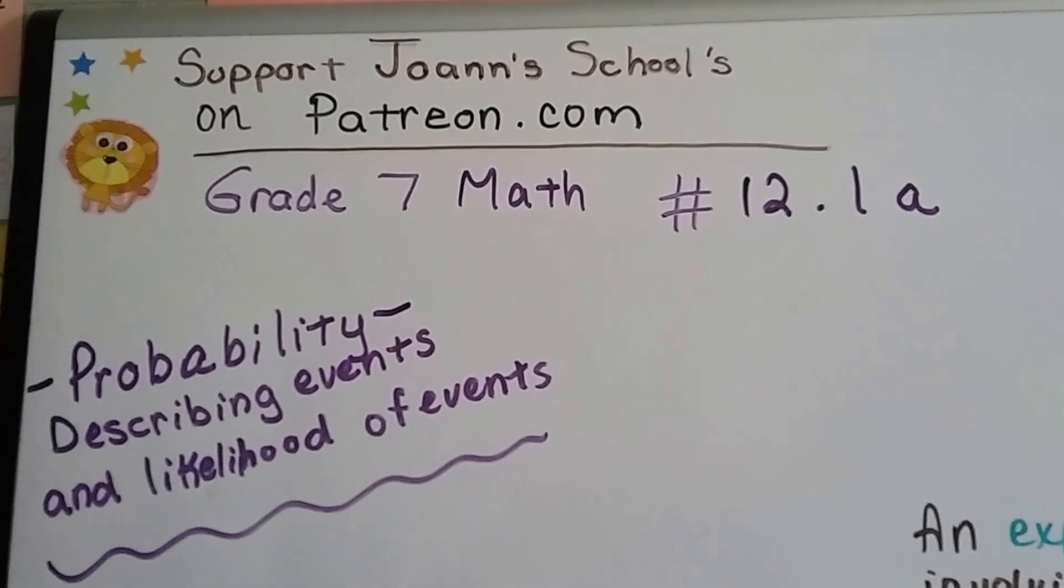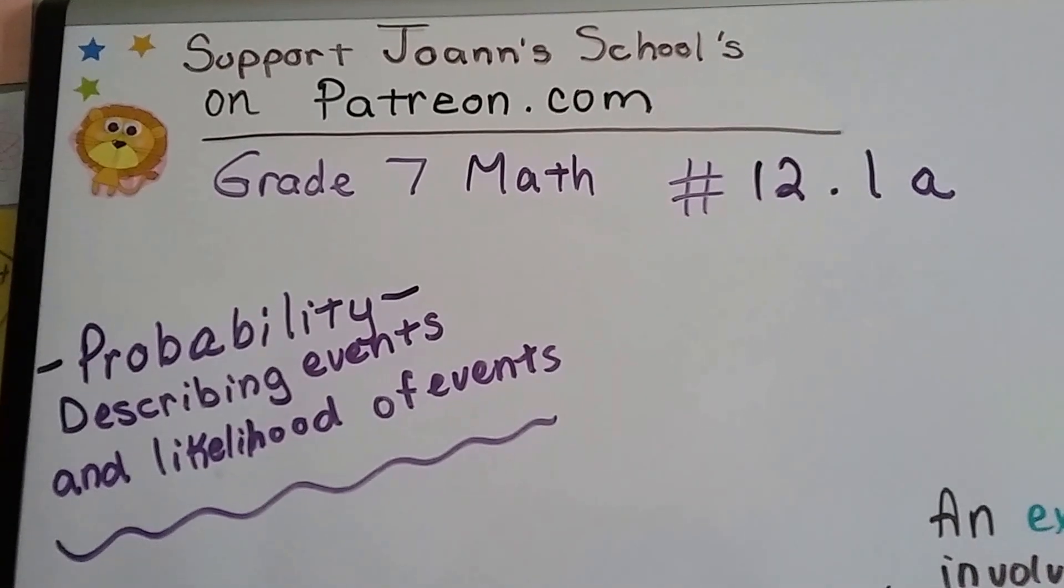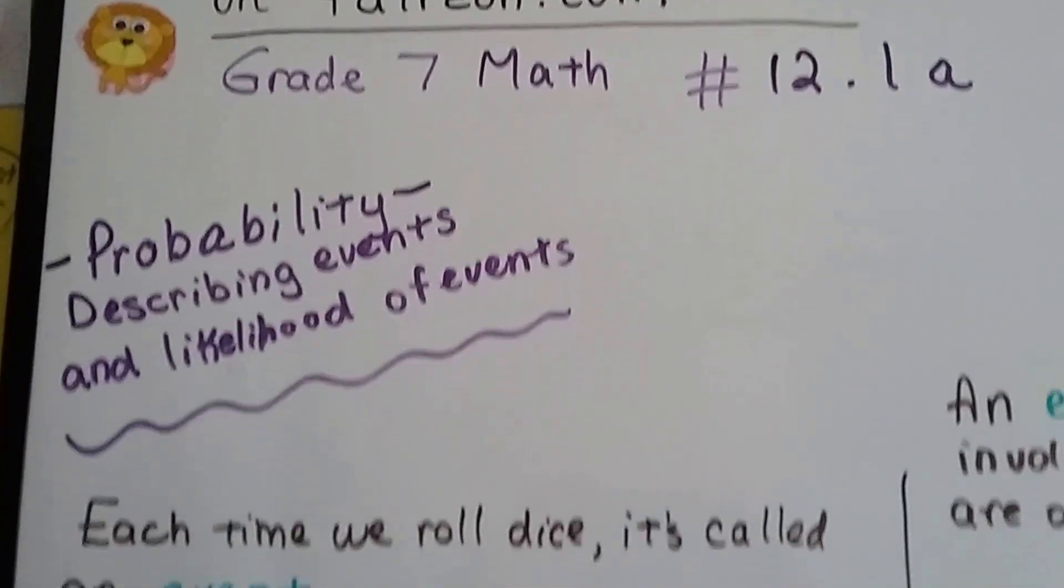Grade 7 math number 12.1a, probability, describing events and likelihood of events.